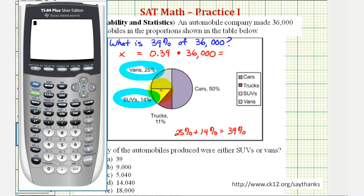So now we'll go to the calculator. So we have 0.39 times 36,000. So 39% of 36,000 is 14,040.